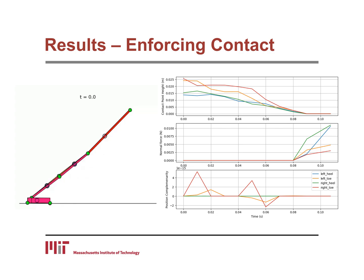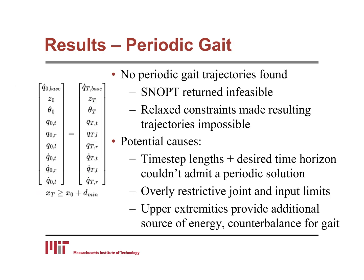That said, I was not able to find any periodic walking gaits. This could be due to a number of different causes, such as overly restrictive periodicity constraints that couldn't be admitted in the desired time horizon, or some contribution from the upper extremity that counterbalances gait and allows us to walk smoothly.